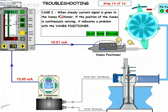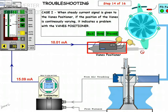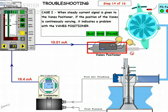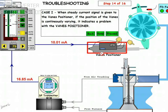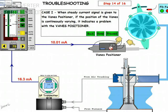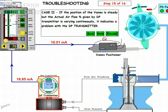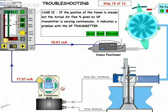Case 1: When a steady current is given to the vane positioner and you can see it is still fluctuating, that indicates the vane positioner is at fault — because with a steady current it should not be fluctuating like this. Case 2: When the current is steady and the vane position is also steady, there is no problem with the vane positioner; the problem is only with the DP transmitter. Change the DP transmitter and it will be okay.